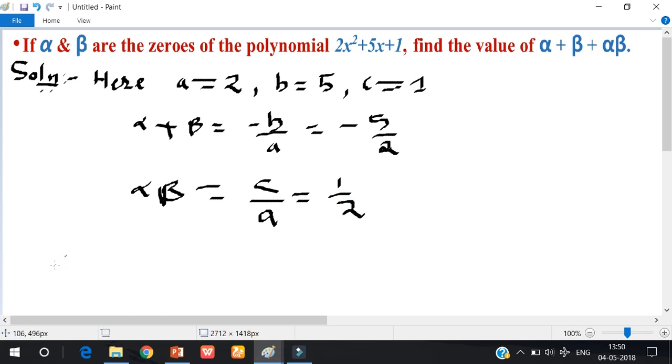So therefore, alpha plus beta plus alpha beta equals minus 5 by 2 plus 1 by 2.